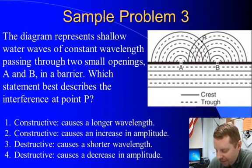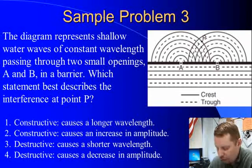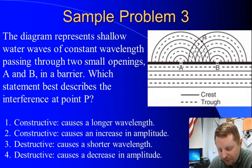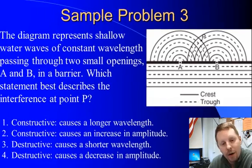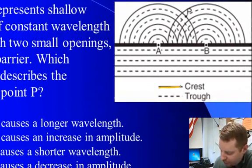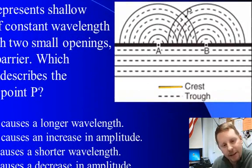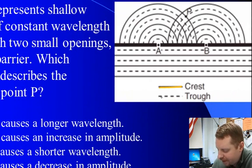Here we have a more complicated diagram showing shallow water waves of constant wavelength passing through two small openings, A and B, in a barrier. Which statement best describes the interference at point P? Well, we first have to note that crests are shown with a straight line, a complete line, troughs with this dashed line.